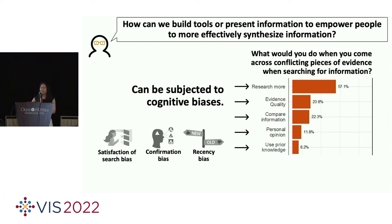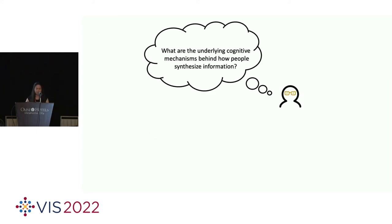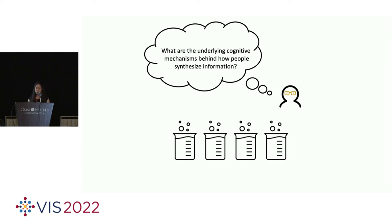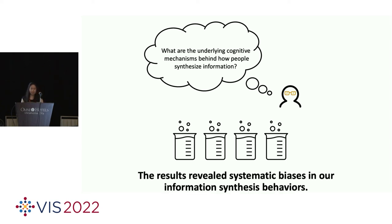So, to mitigate these biases, we should think about how we can build tools or present information in a way that can empower people to more effectively synthesize information and make informed decisions. But before that, we need to investigate the underlying cognitive mechanisms behind how people synthesize information. So, we conducted a series of experiments here where we asked participants to synthesize information and report their mental representation. And the results revealed systematic biases in our information synthesis behaviors.